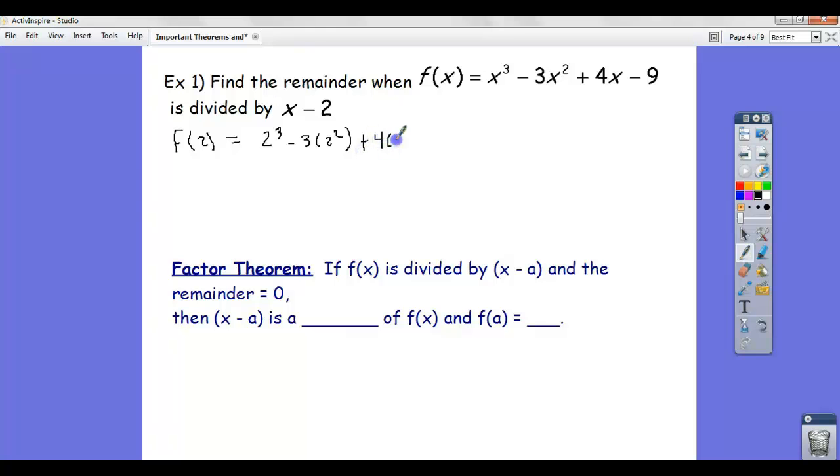plus 4 times 2 minus 9. And we get 8 minus 12, plus 8 minus 9. And that equals, this is negative 4, plus 8 is 4, minus 9 is negative 5.